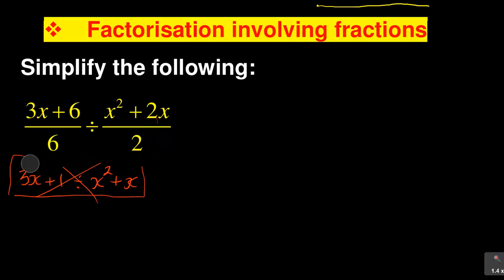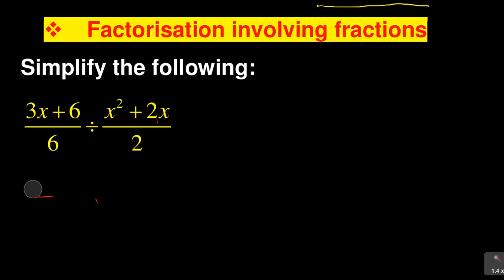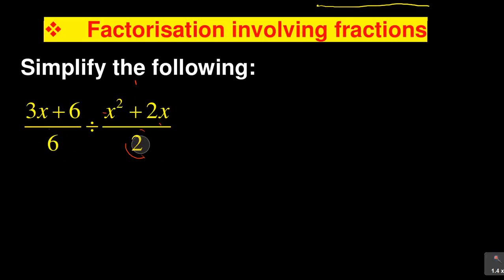You cannot just cancel the 6 like that. Why? Because when you cancel the 6, what about the 3x? Whatever you do to the 6 you must also do to the 3x. Similarly, whatever you do to 2x you must also do to x². This is because between these terms you have a plus sign — and even if it were a minus sign, the same rule applies.